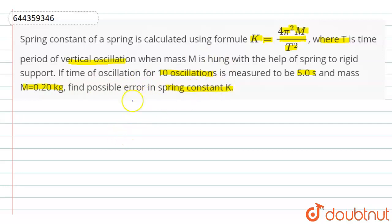Here, according to the question, the value of spring constant K is 4π²M divided by T².